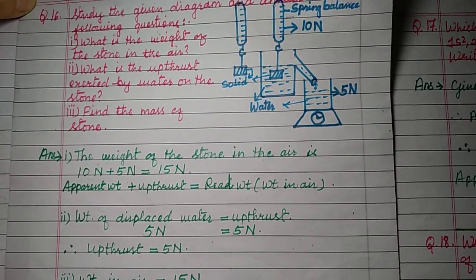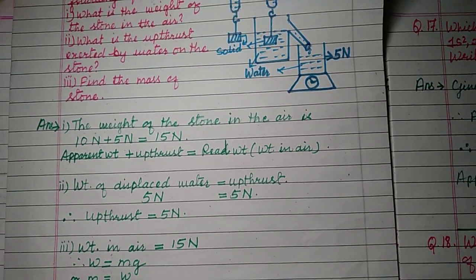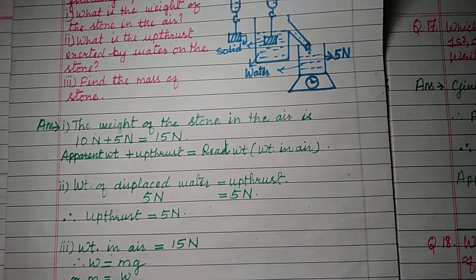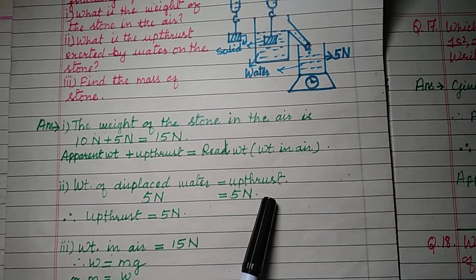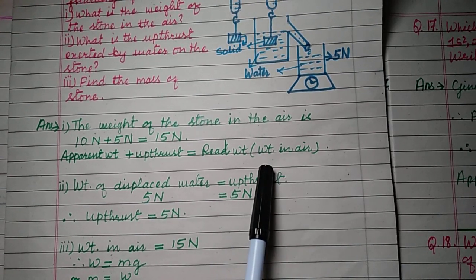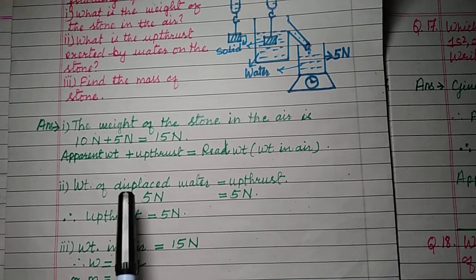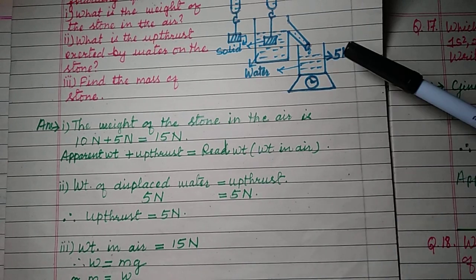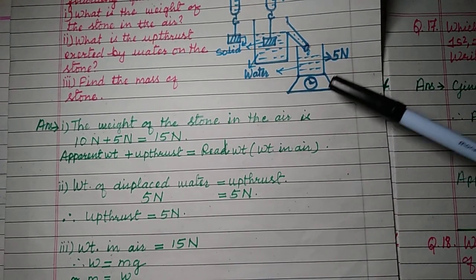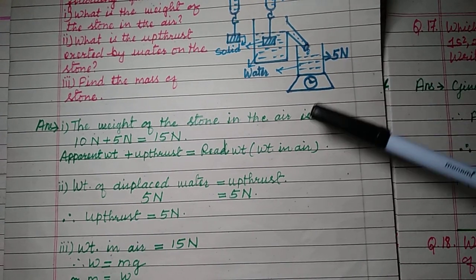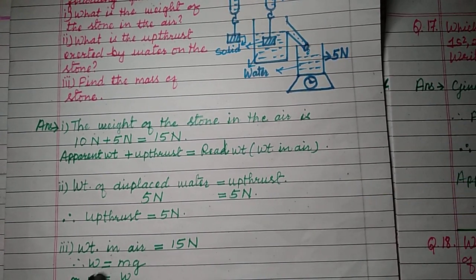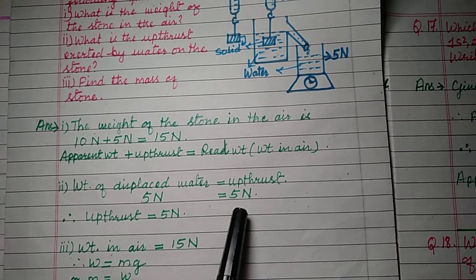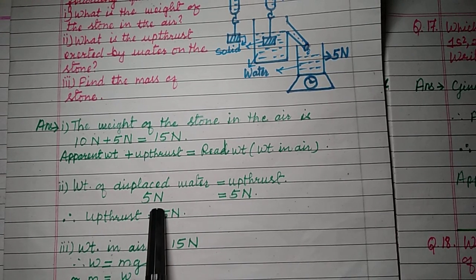Question two: what is the upthrust exerted by water on the stone? According to the formula, weight of displaced water equals upthrust. In our case, the weight of water displaced is 5 newton, so the upthrust is 5 newton.